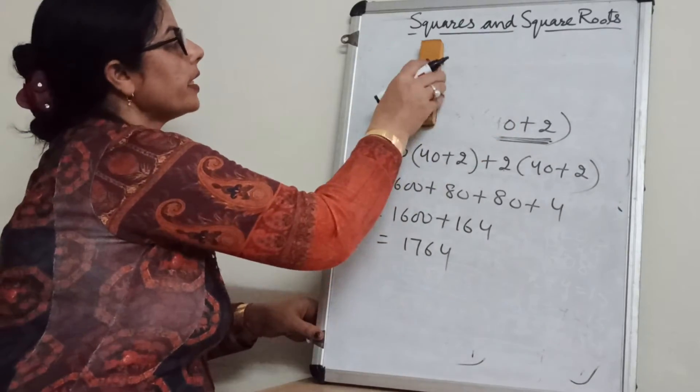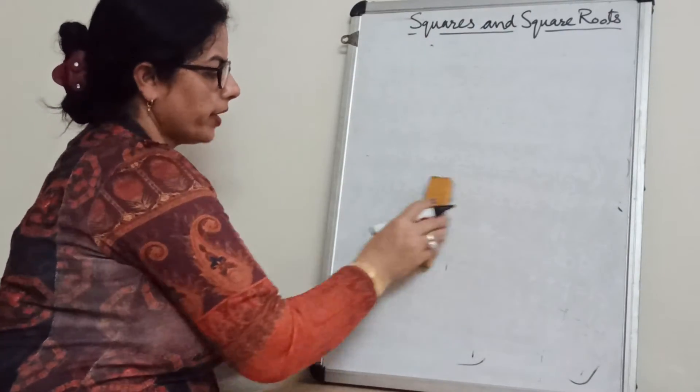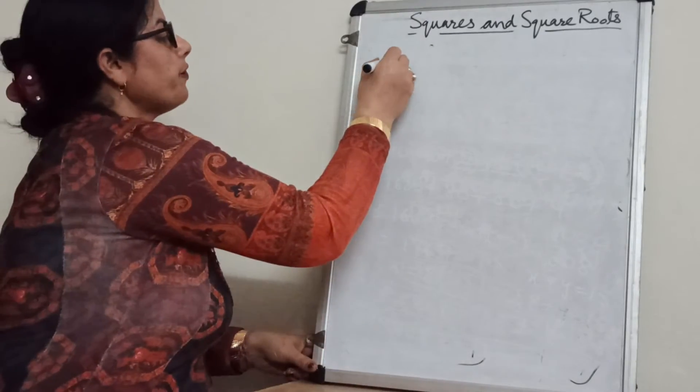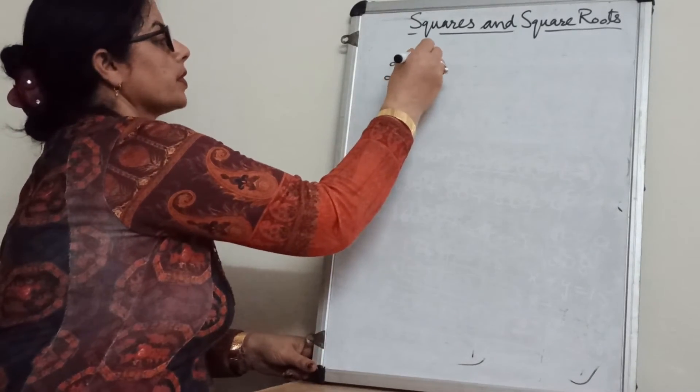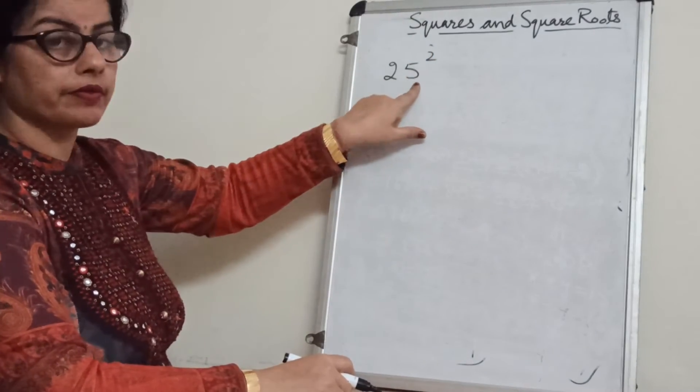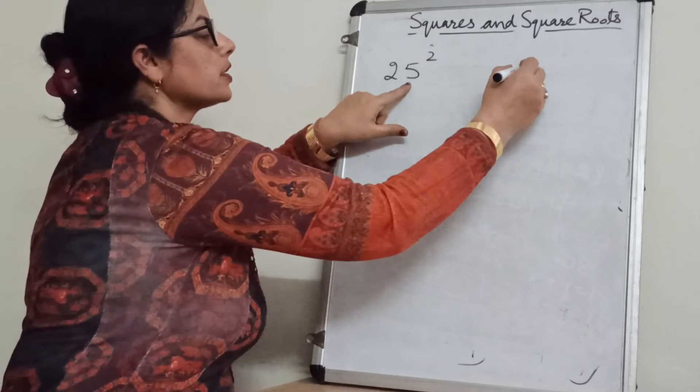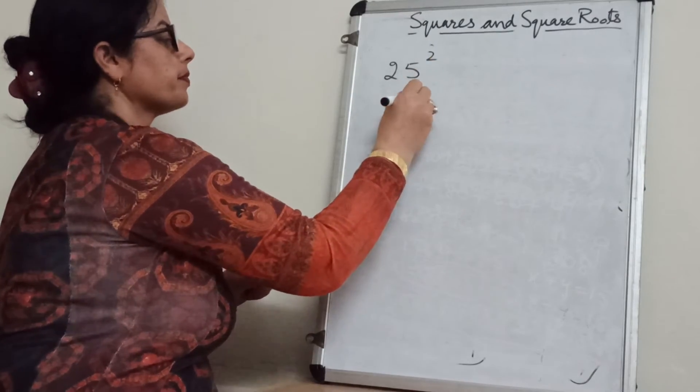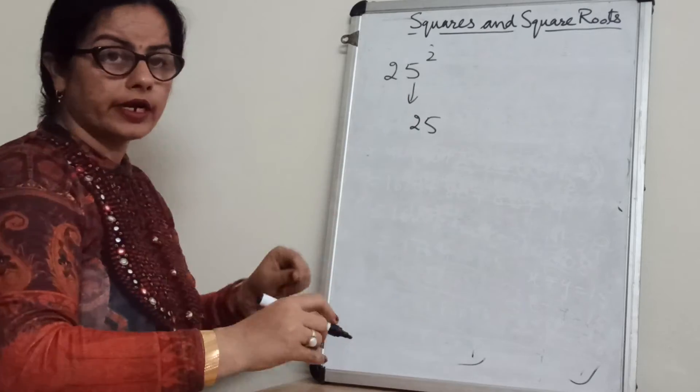Now one more thing I am telling you. How to find square of a number ending with 5. 25 square. See unit digit is 5. First we will find the square of 5. 5 into 5 is 25.